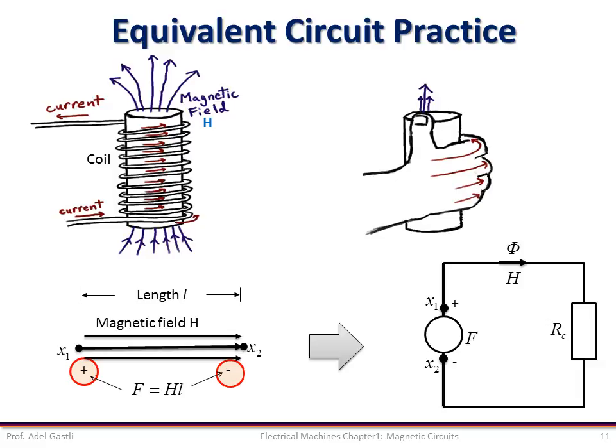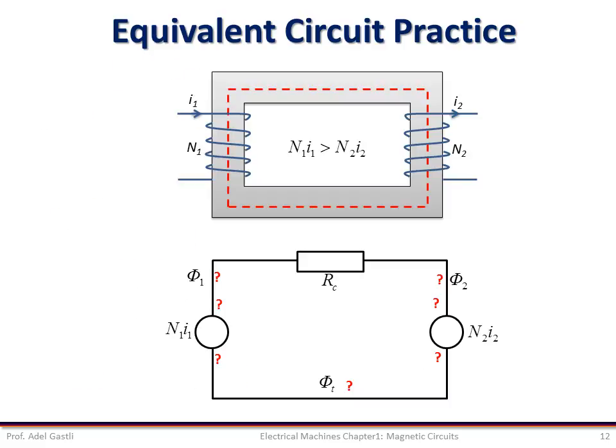These same steps and procedure are followed whenever we have a coil in the magnetic circuit. If we have more than one coil, then we should have more than one MMF in the equivalent circuit. Now, I let you practice on few simple examples. I suggest that you pause the movie now and spend some time thinking about the answers before you get the right answer in the next slide.